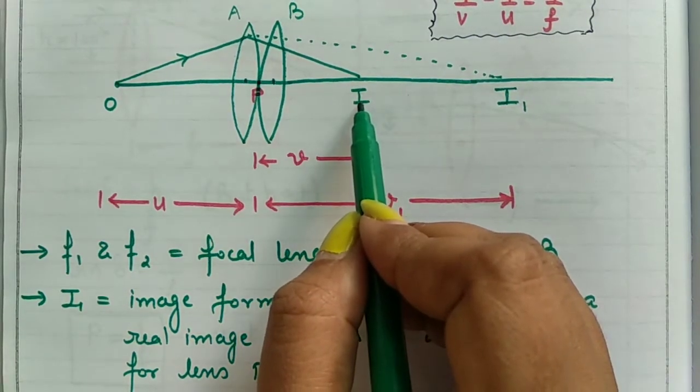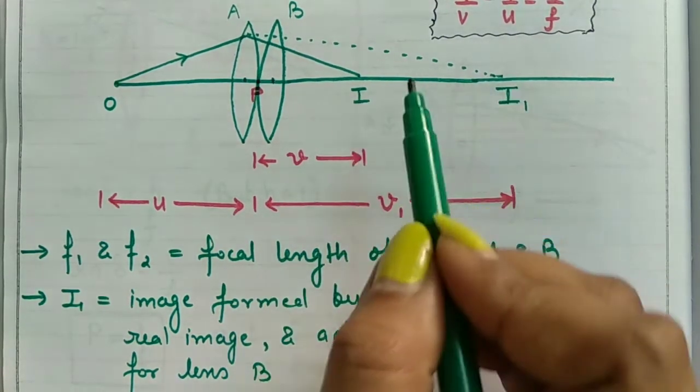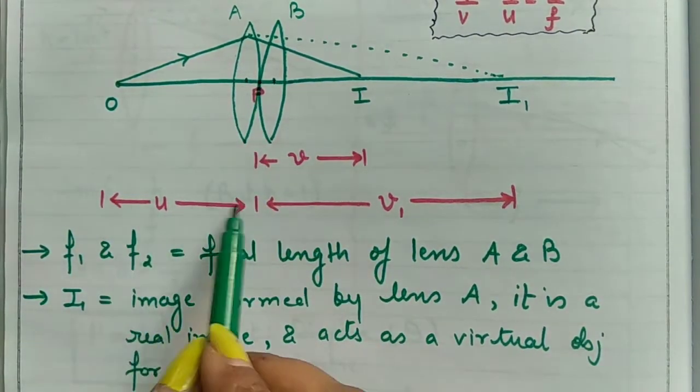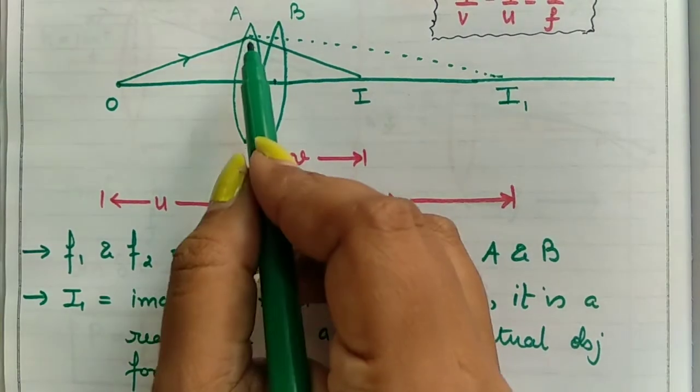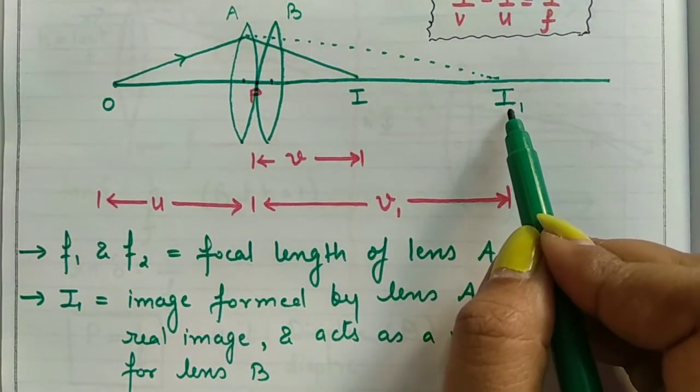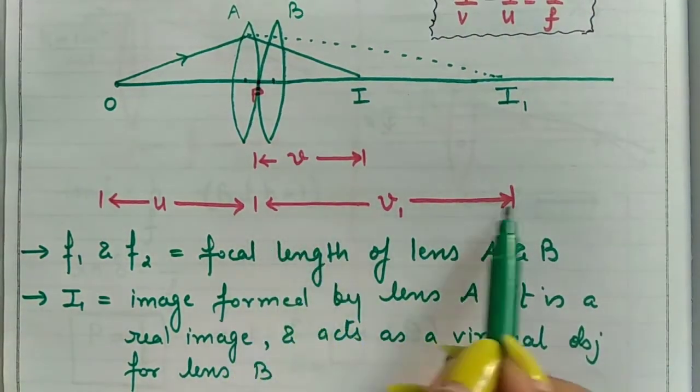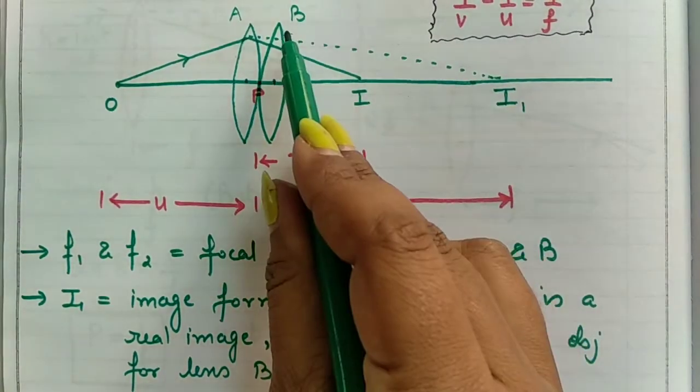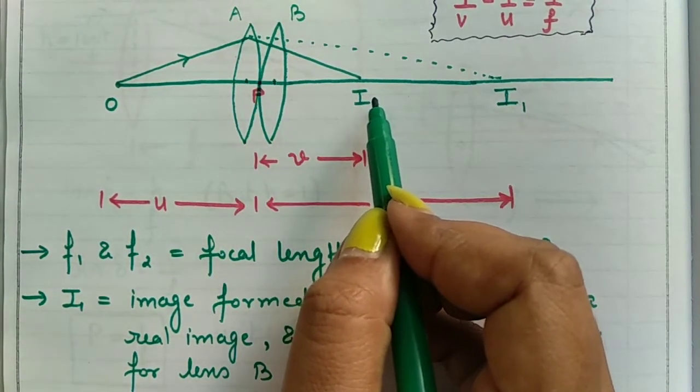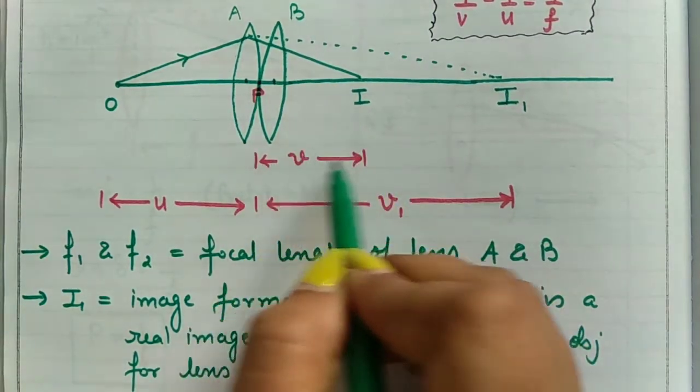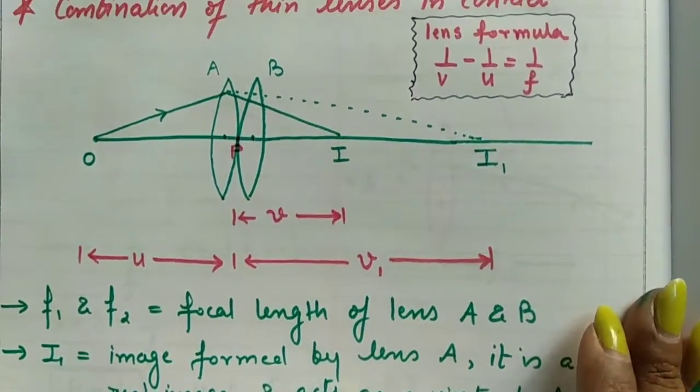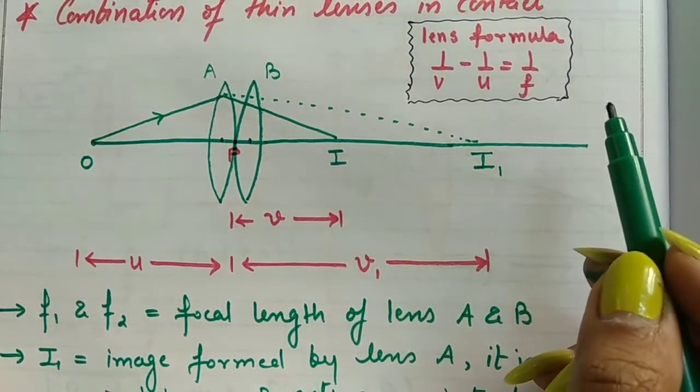So lens B will then form the final image here. Now let's see the distances. This was the object, so object to the lens center is known as object distance for lens A. The image distance was this one because this was the image for lens A. This is the image distance for lens A, and this was the image formed by lens B. This is the image distance for lens B.